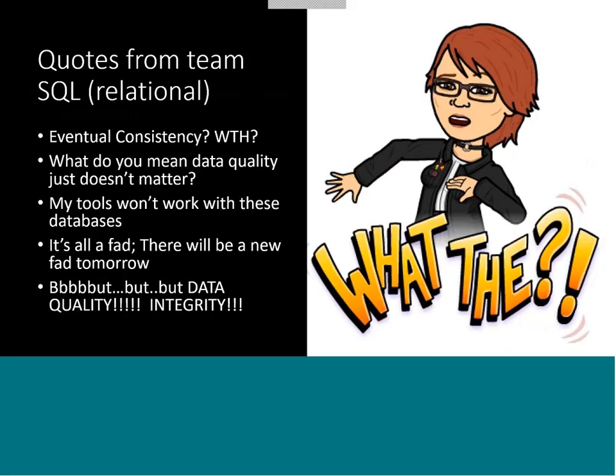I also hear from the relational team: eventual consistency — what the heck is that all about? Our data wants to be consistent. We would never write half a record, never write half a row, never write half of an invoice — well, yes we would, just not in a transactional design. And then: what do you mean that data quality just doesn't matter? Well, guess what — if you're streaming in sensor data, you can have some incorrect data. You want to capture that, because even the measurement that's incorrect is a fact that you want to know. And the biggest one is: my data modeling tools or my database design tools won't work with these databases.